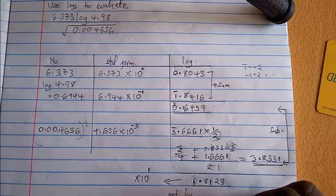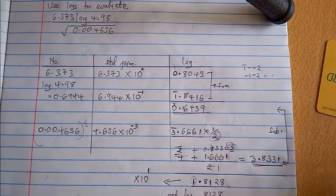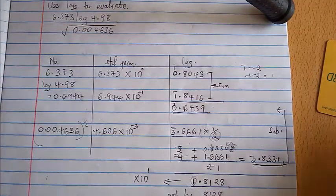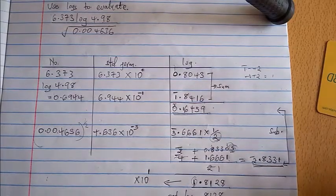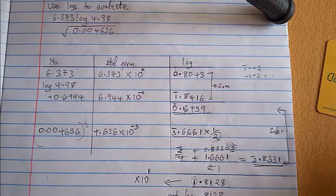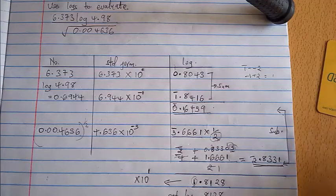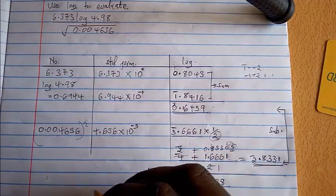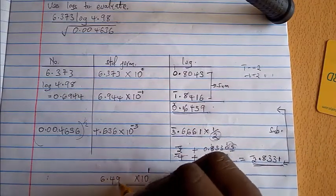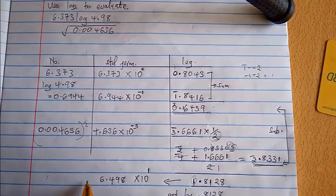Then we find the anti log, so let's get the anti log of 0.8128. Now the anti log of 0.8128 will be 6.498.